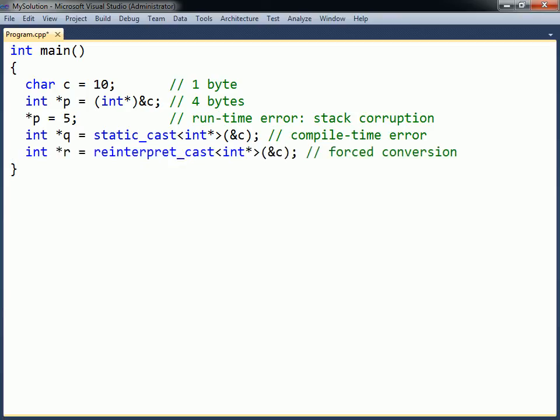This cast handles conversions between certain unrelated types, such as from one pointer type to another incompatible pointer type. It will simply perform a binary copy of the data without altering the underlying bit pattern. Note that the result of such a low-level operation is system-specific and therefore not portable. It should be used with caution if it cannot be avoided altogether.